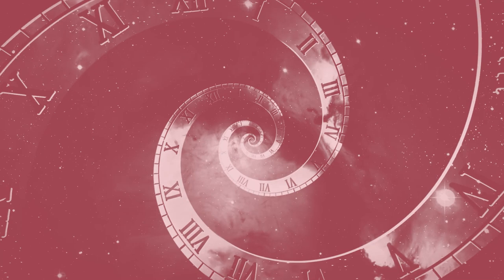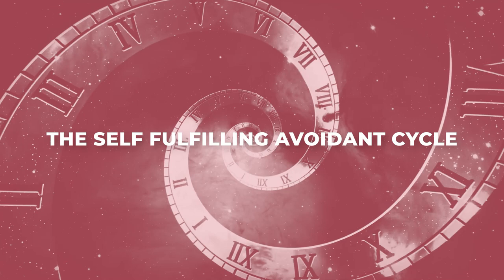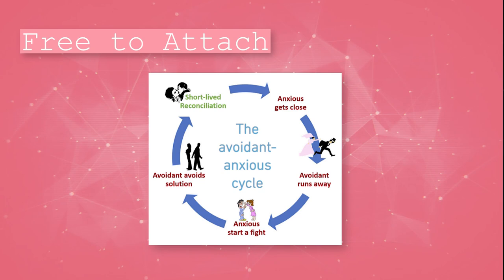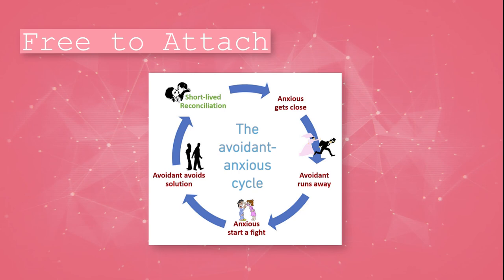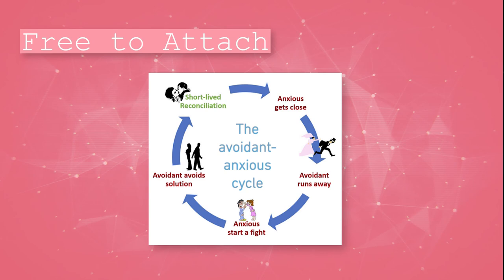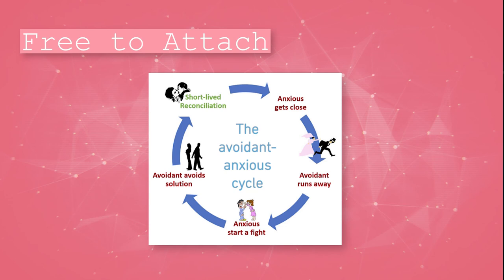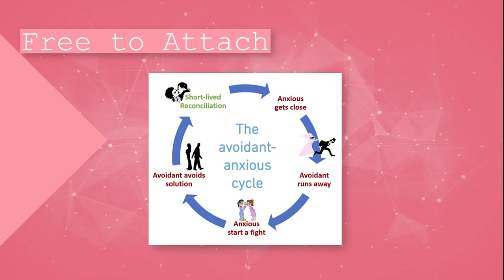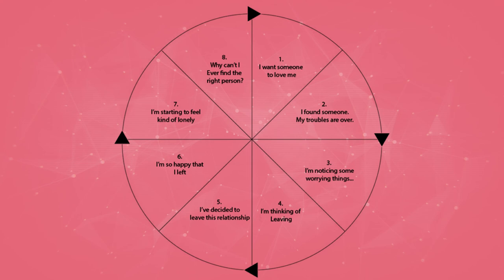Pretty soon, once the relationship starts, this really odd self-fulfilling cycle begins. Have you ever wondered why we see so many on-again, off-again relationships between this pairing in particular? Free2attach.com has their own graphic depicting this self-fulfilling avoidant cycle: the anxious person gets close, then the avoidant runs away, then the anxious person starts a fight, then the avoidant avoids the solution, then they break up, there's a short-lived reconciliation, and then it continues again and again. I've created my own graphic detailing the struggles of these two attachment styles when partnered together — one I feel is a bit more detailed — with eight distinct stages.